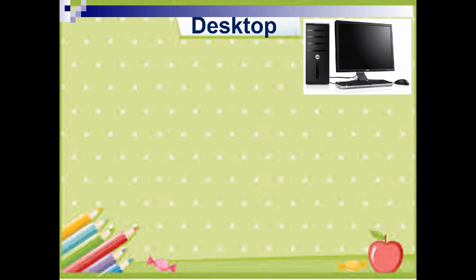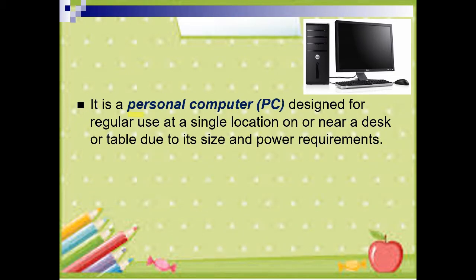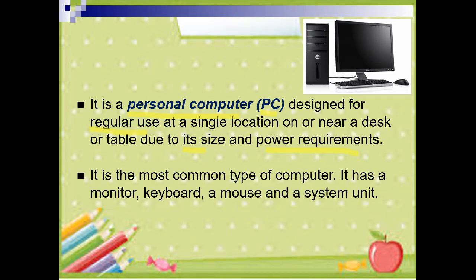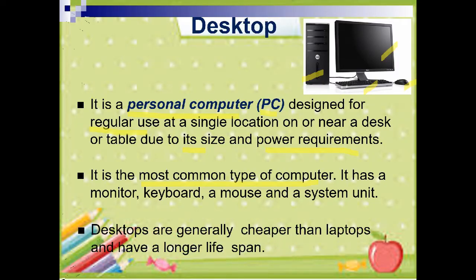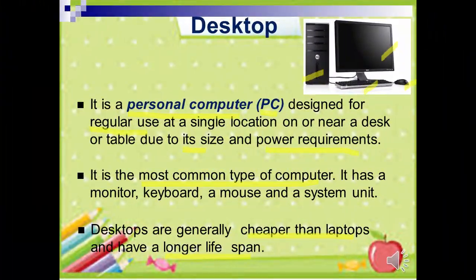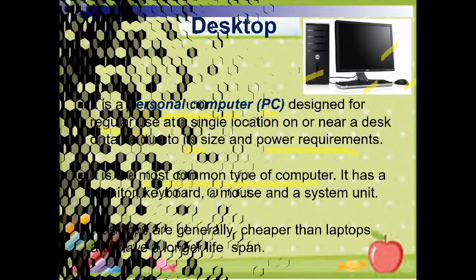The first one is the desktop. What is a desktop? It is a personal computer or PC designed for regular use at a single location on or near a desk or table due to its size and power requirements. It is the most common type of computer. It has a monitor, a keyboard, a mouse, and a system unit.